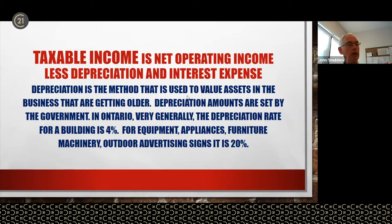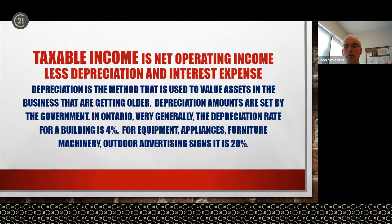Some sellers are going to give you the taxable income. Taxable income is the net operating income less depreciation and interest expense. Depreciation is the method used to value assets in the business that are getting older. Depreciation amounts are set by the government.